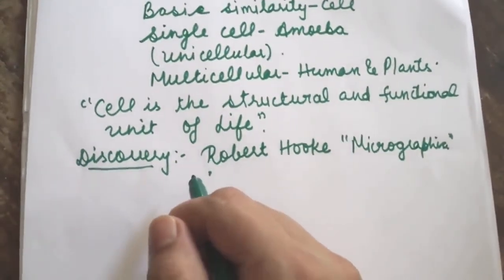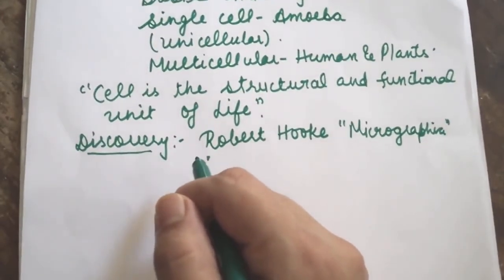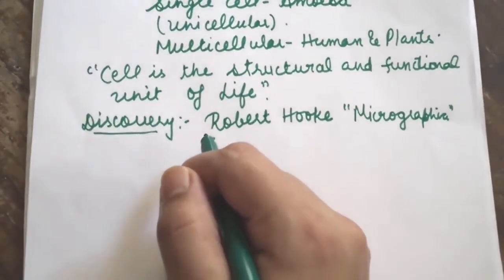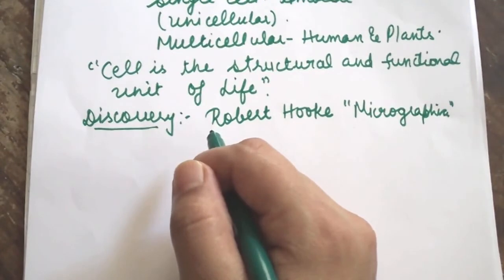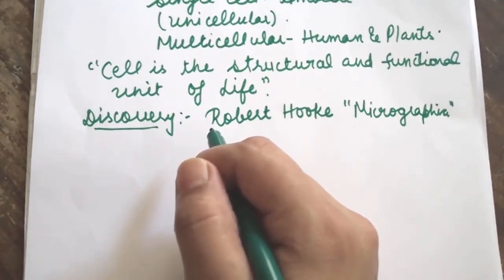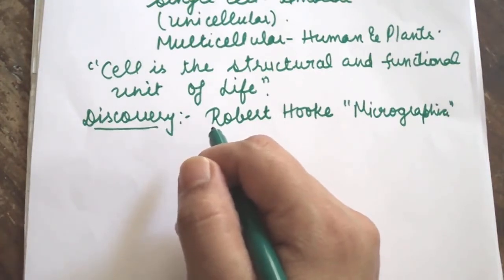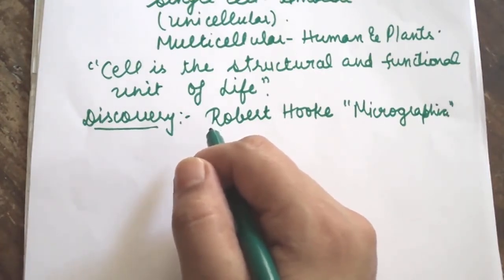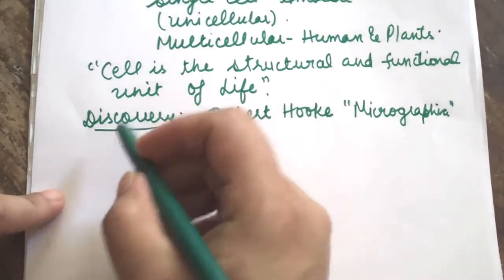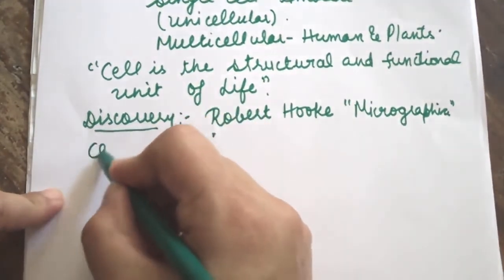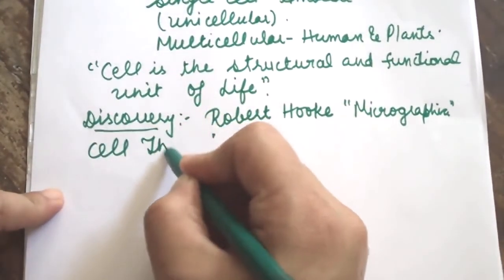Later on, Anthony van Leeuwenhoek, a Dutch scientist, designed an improved microscope and studied free living cells in the form of bacteria for the first time in 1674. Leeuwenhoek described protozoans, RBCs and human sperm cells. And then next is cell theory. These are the discoveries.